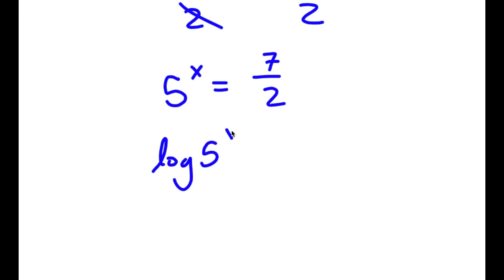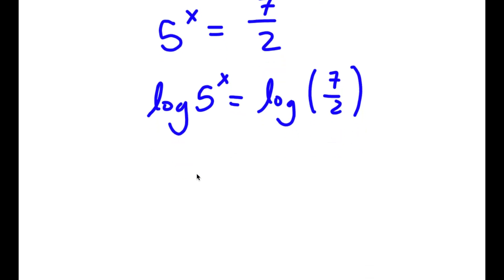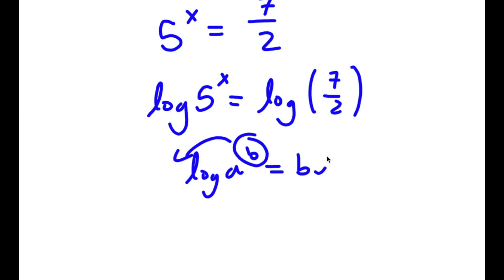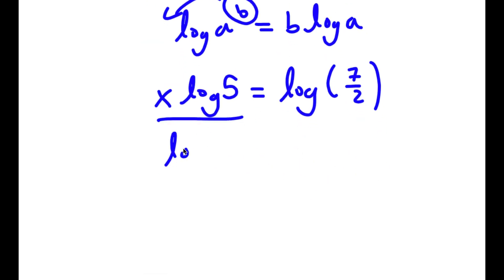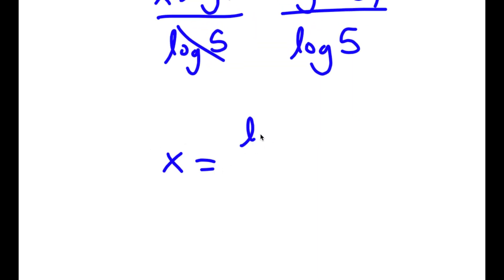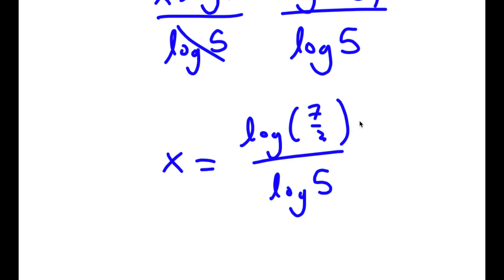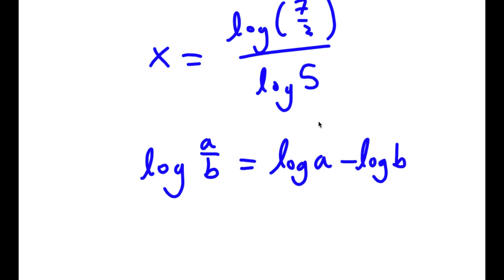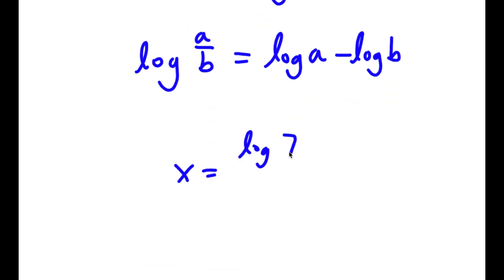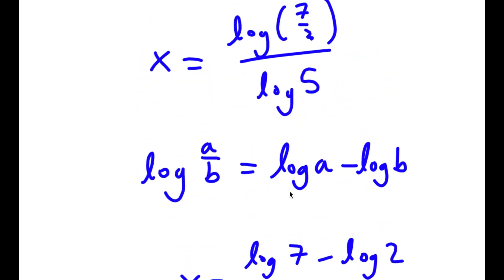Taking the log on both sides: log of 5 to the power of x equals log(7 over 2). Since I can move the exponent x to the front, I have x times log 5 equals log(7 over 2). Dividing both sides by log 5, I get x equals log(7/2) over log 5. If I have something in the form log(a over b), this equals log a minus log b. So log(7/2) equals log 7 minus log 2, and I have this over log 5.